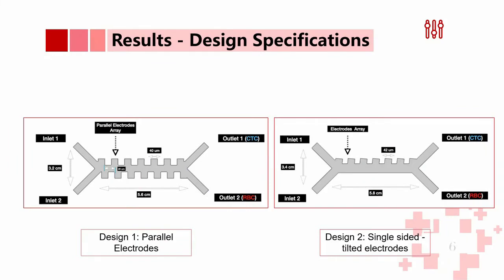In this project, we successfully designed two functional devices that could perform separation of cancerous cells from normal cells. The designs have almost similar dimensions with two inlets and two outlets—one for cancerous CTCs and one for red blood cells. The only difference is that the first design has parallel electrodes on both sides of the channel, while the second design has single-sided electrodes with five degrees of tilt.